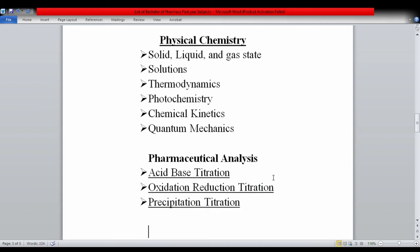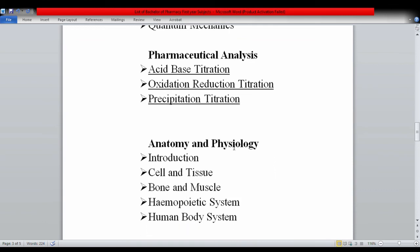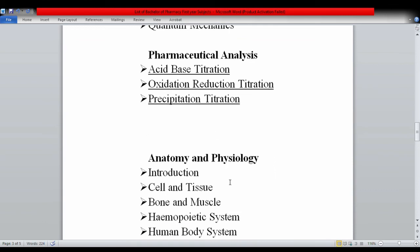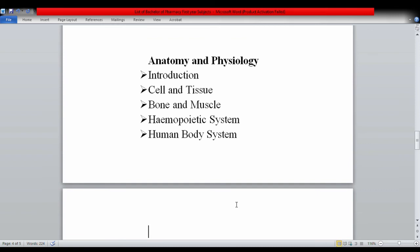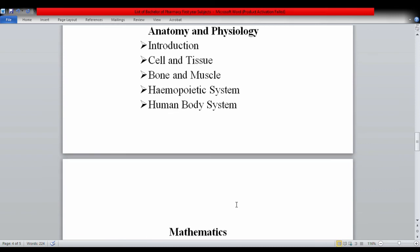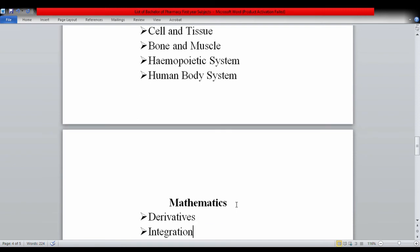Anatomy and Physiology - you need to understand human body because drugs act on the human body. To design new medicines, you must first know anatomy. Topics include introduction to human body, cells and tissues, bones and muscles, and different human body systems like digestive, cardiovascular, and respiratory systems.